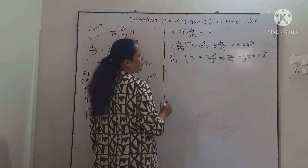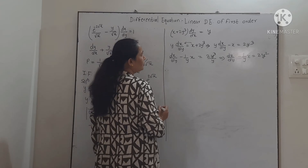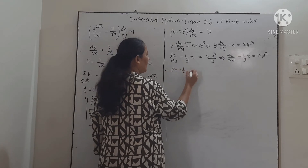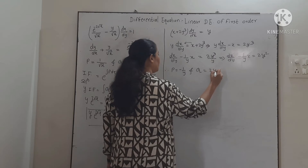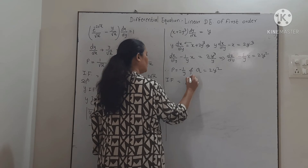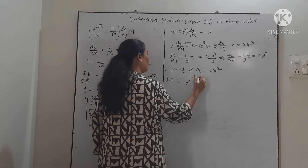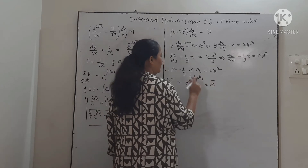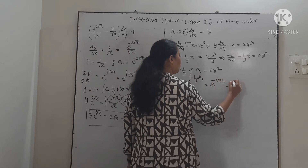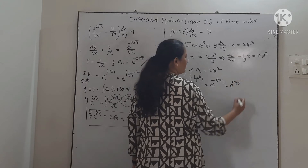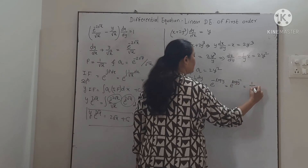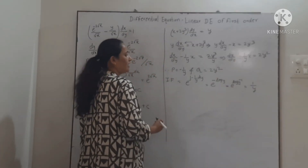Comparing with dx/dy + Px = Q, we get P = −1/y and Q = 2y². The integrating factor is e^(∫−1/y dy) = e^(−log y). By the rules of logarithm, this is e^(log y⁻¹), and since the exponential and logarithm cancel, the integrating factor is 1/y.